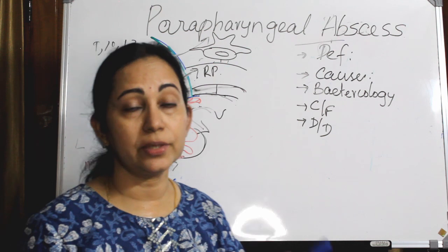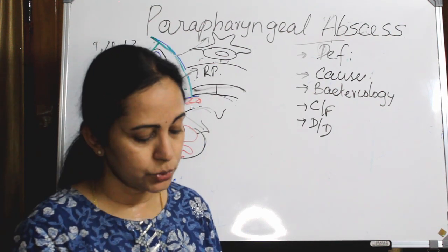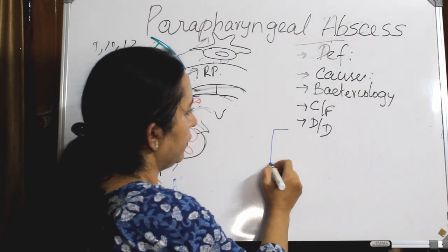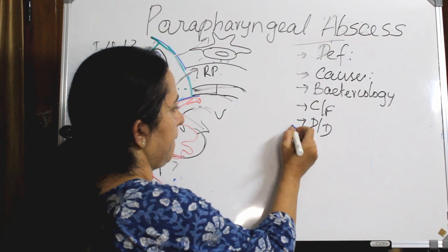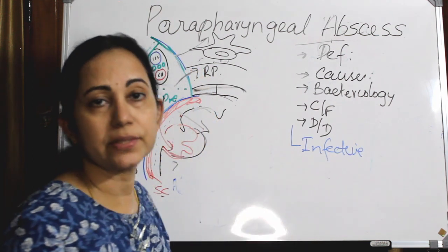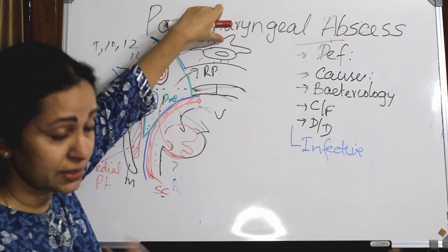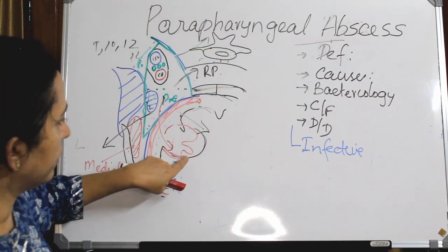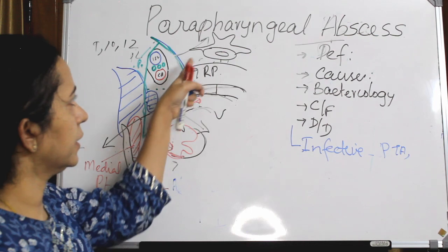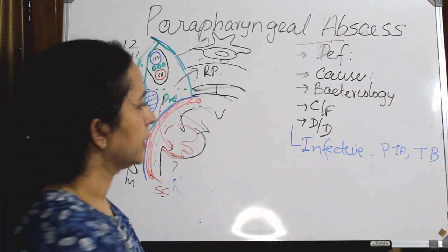Differential diagnosis refers to other swellings that can mimic a parapharyngeal abscess. Under infective causes, these include peritonsillar abscess and spinal tuberculosis (Pott's disease), given the proximity to the cervical vertebrae.